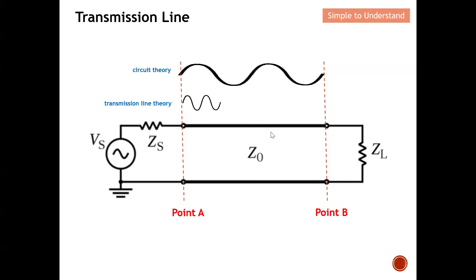Under transmission line theory, this won't be a simple cable — it will be a transmission line. The equivalent circuit of the transmission line consists of shunt C and series L. With these elements, it actually delays the speed of propagation. Under circuit theory, the speed of propagation is essentially infinite — the signal can travel from point A to point B instantly. However, with the lumped elements of shunt C and series L, the speed of propagation is reduced. The signal propagates as a wave from point A to point B, and this is what we call transmission line theory. Because of this, there will be a change of impedance — which also indirectly changes the voltage and current at any point along the transmission line.